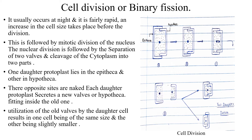Cell division is followed by mitotic division of the nucleus. You can see nuclear division taking place here. Karyokinesis results in the formation of two nuclei, and it is followed by cytokinesis. The epitheca and hypotheca get separated, each with one nucleus, and each theca then produces or creates a new valve, which is the hypotheca in both cases.